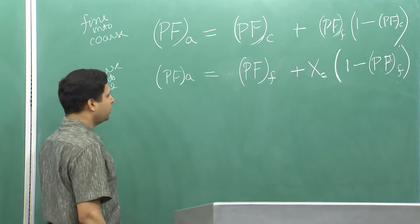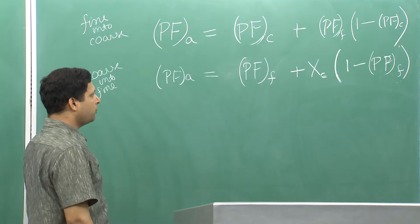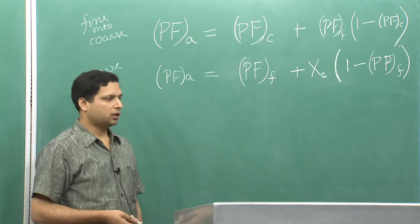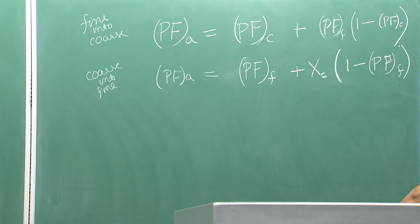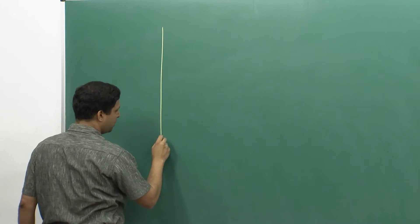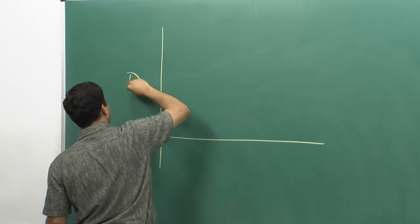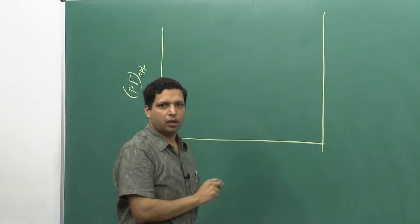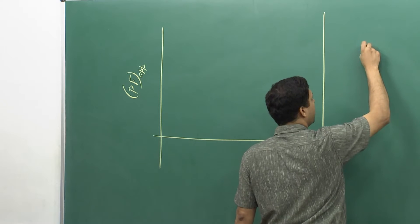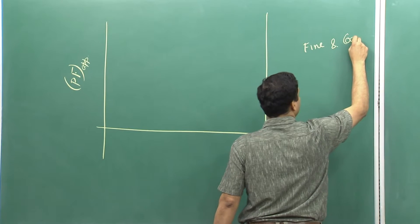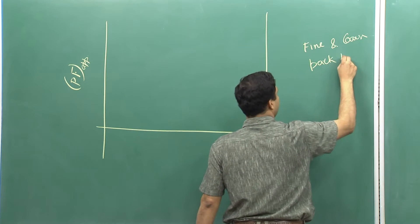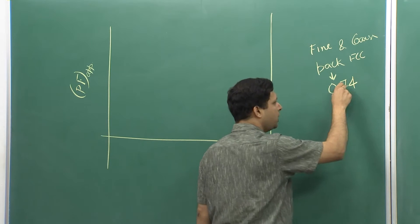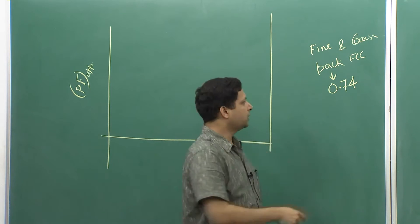This is the relation we obtained in the previous class. Today we will see how the plot looks, with fraction of coarse grains on the x-axis and packing fraction on the y-axis. We will also make an assumption so we can put in exact numbers — that both fine and coarse particles pack in an FCC-type structure, meaning they will have a packing fraction of 0.74.